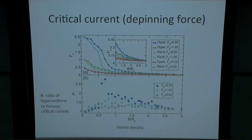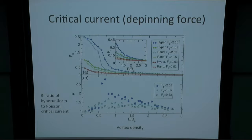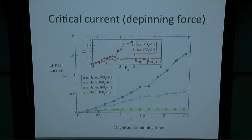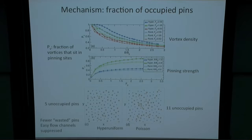We can map out the critical current as a function of density for different pinning strengths and both our hyperuniform and random systems. Taking the ratio — hyperuniform critical current compared to Poisson critical current — we see consistently this is larger than one, even out to fields of up to three times v over v_phi. So the hyperuniform array is doing a better job of pinning the vortices and keeping them from moving. The enhancement can be as high as 2.5 in this case. Looking at this as a function of pinning strength, it turns out that the stronger the pinning is, the more effective the hyperuniform array is compared to the random — you're getting more bang for your buck out of the pinning sites placed in the sample.